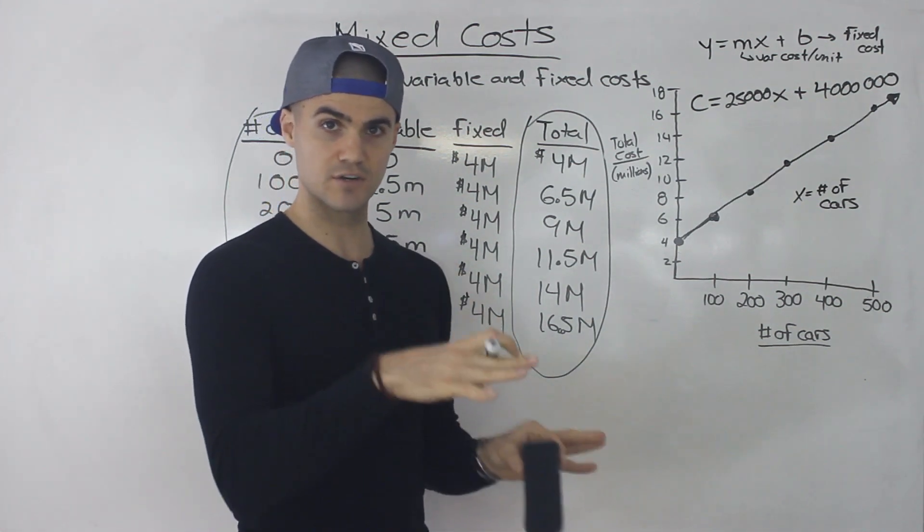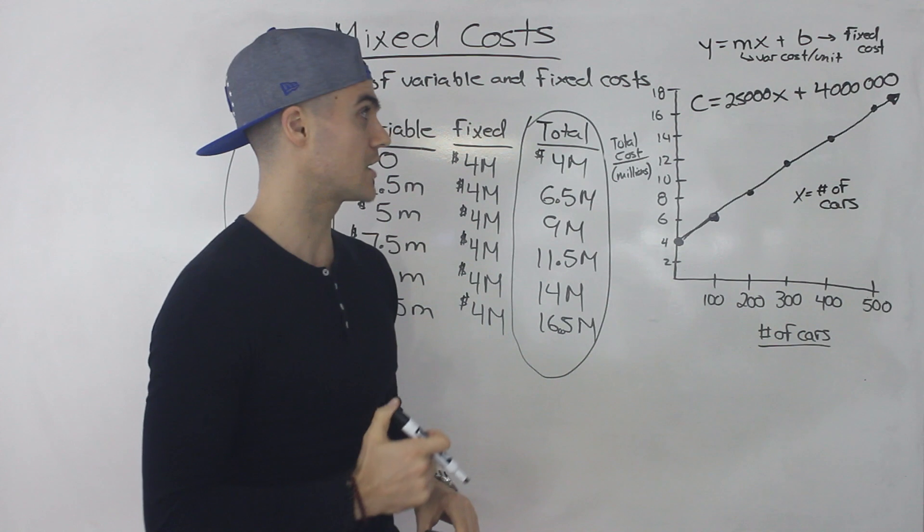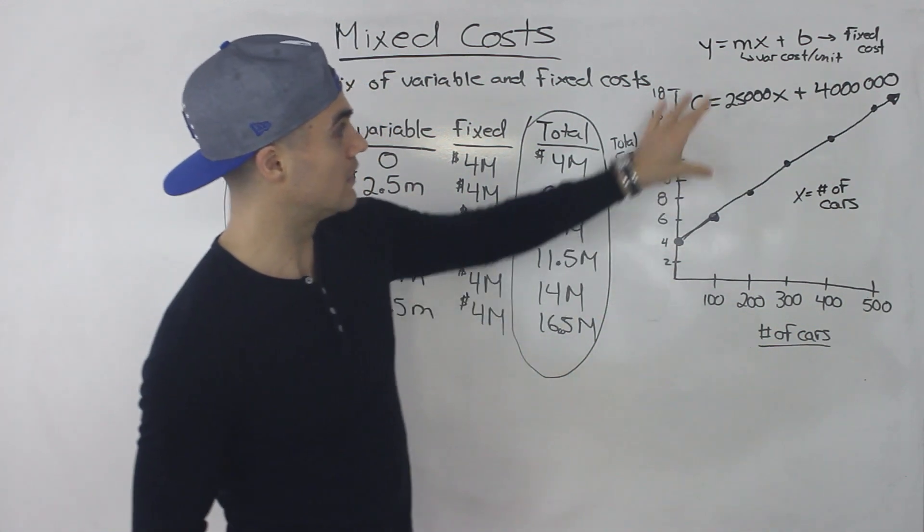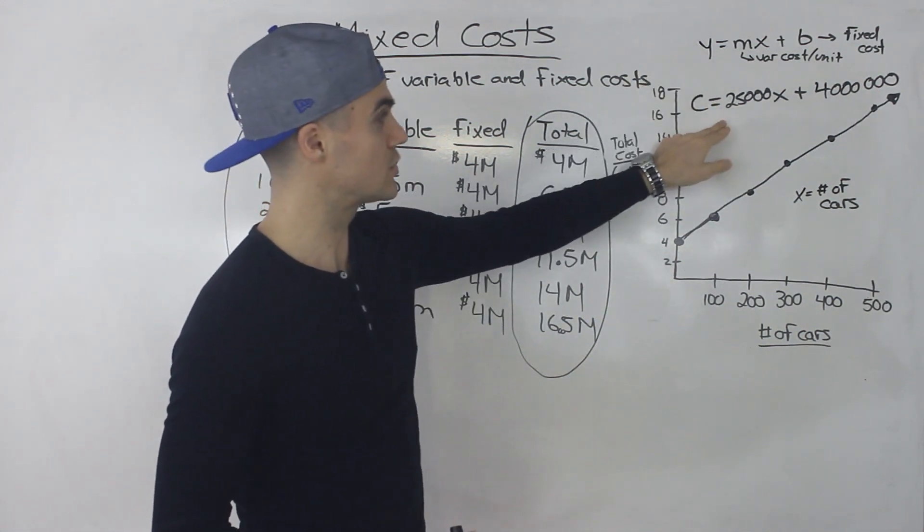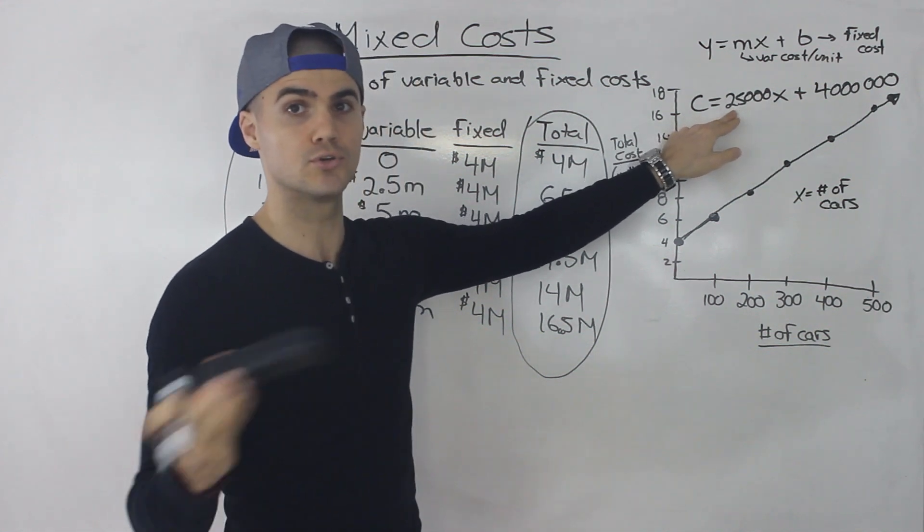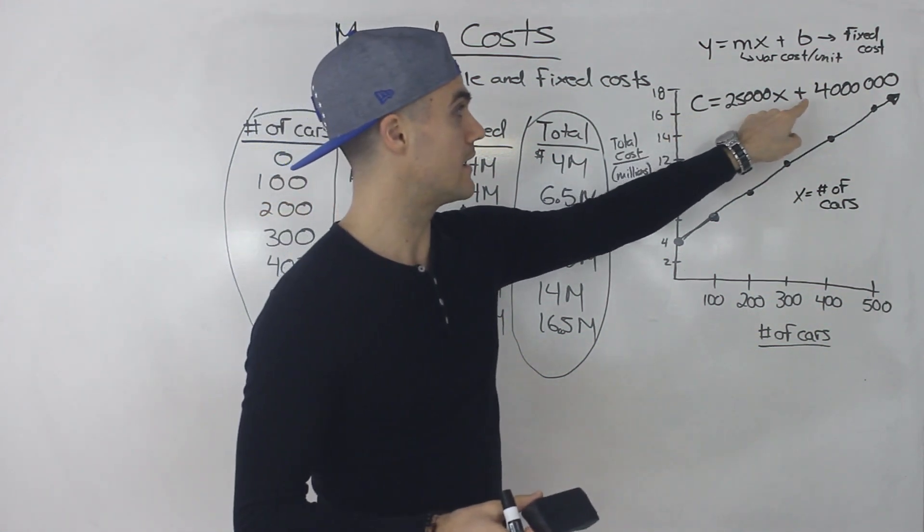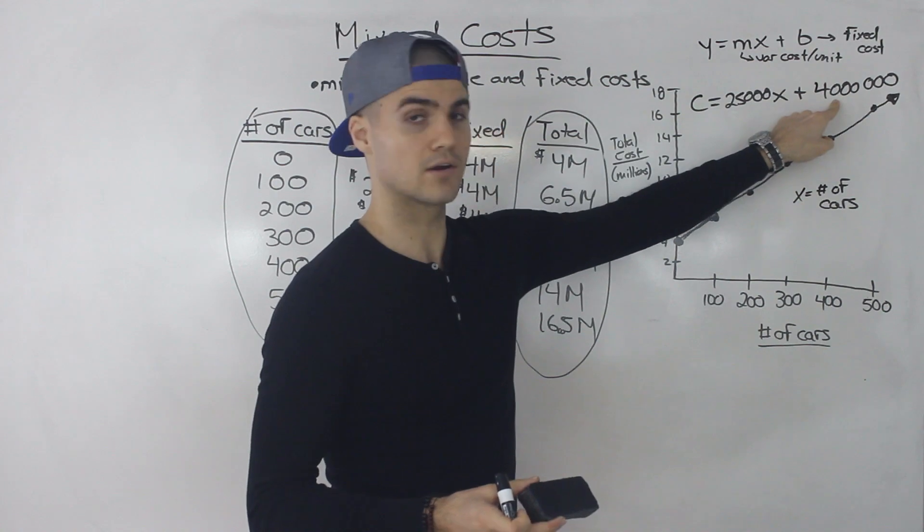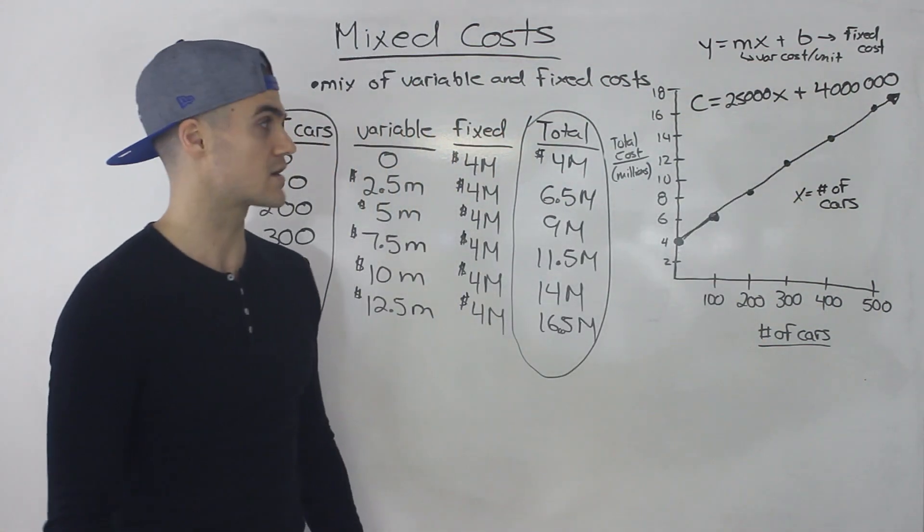So sometimes you'll be given equations. And sometimes you're going to have to create them. But just remember, they're always going to be in this format, the slope is going to be the variable cost per unit. And then the b value here, that's going to always be the fixed cost.